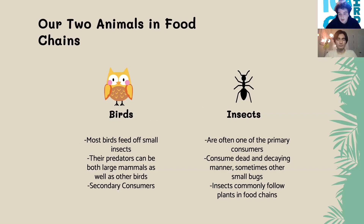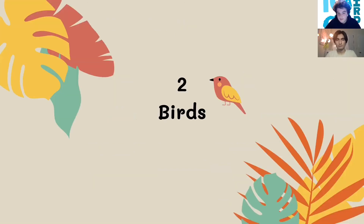Insects usually consume dead matter and small bugs — dead matter is basically dead things — and insects commonly follow plants in food chains. Now I'm going to pass it to Edwin, who will be covering a more in-depth analysis on birds and insects.